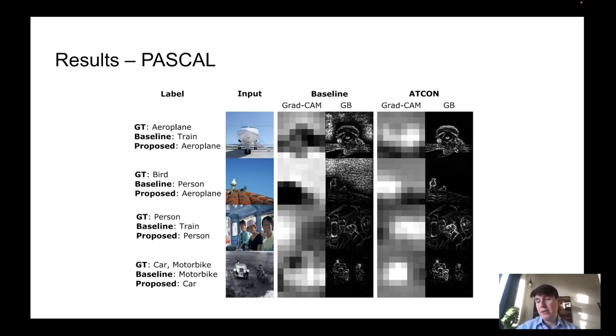With the proposed method, the attention maps are much more consistent. They show the correct object and interestingly, it also improves the classification results. So for example, this was misclassified as a train and now it's correctly classified as an airplane.